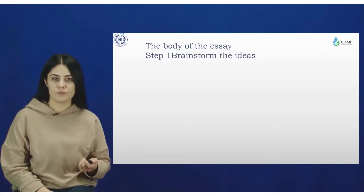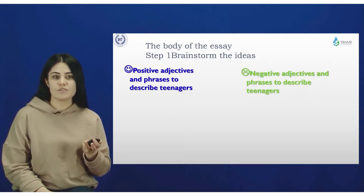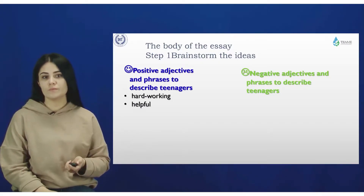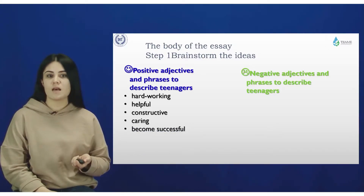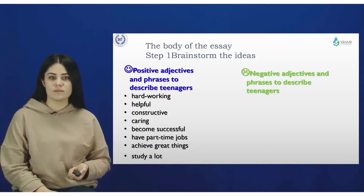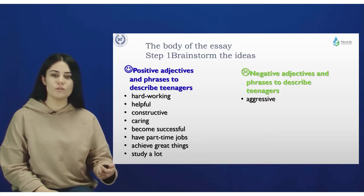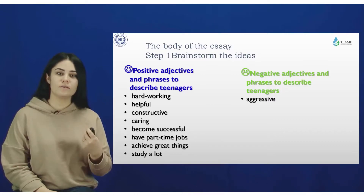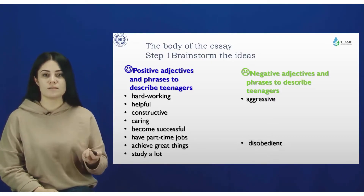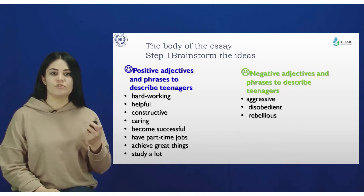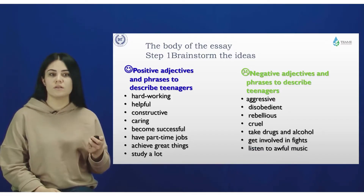For the body of the essay, Step 1: brainstorm your ideas. Positive adjectives and phrases to describe teenagers include: hardworking, helpful, constructive, caring, becoming successful, having part-time jobs, achieving great things, and studying a lot. Negative adjectives include: aggressive, disobedient, rebellious, cruel, taking drugs and alcohol, getting involved in fights, and listening to awful music.